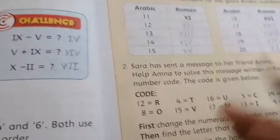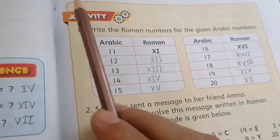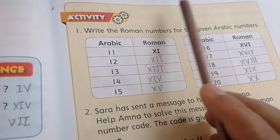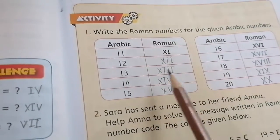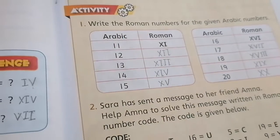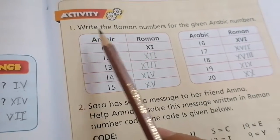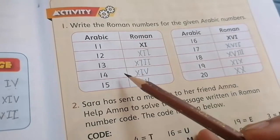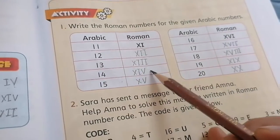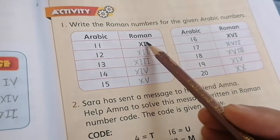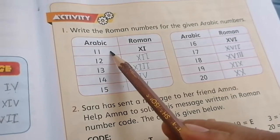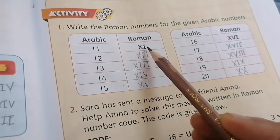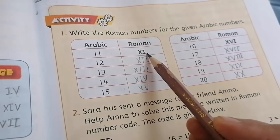There is an activity on page number five. What you have to do — you have to write the date and classwork or homework on the top, so you can remember the day on which we did the activity. Write the Roman numbers for the given Arabic numbers. These are the Arabic numbers and we have to write the Roman numbers. The first is done for you. The first number in Arabic is 11. We can write it in Roman like this — X is used for 10, and X plus I stands for 11.